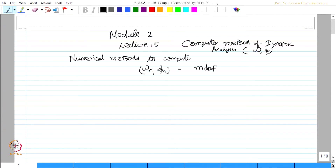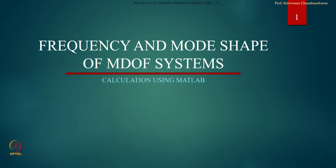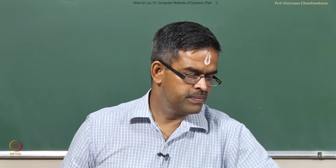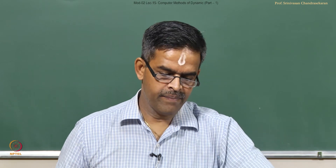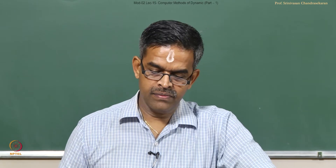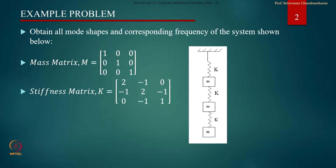We will again compare the results of a specific problem — what we did in the last lecture by hand — and compare the results with computer codes. We will see that they are again in better agreement. We will take an example problem that demands obtaining all mode shapes and the corresponding frequencies of a system with three stiffnesses k, k, k and mass m which are equal.